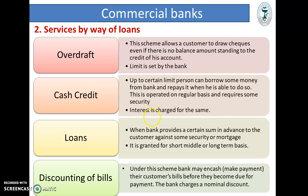Second type of loan is Cash Credit. It also requires security. Up to a certain limit, a person can borrow money from the bank and repay it whenever able to do so. This is operated on a regular basis and interest is charged for the same.